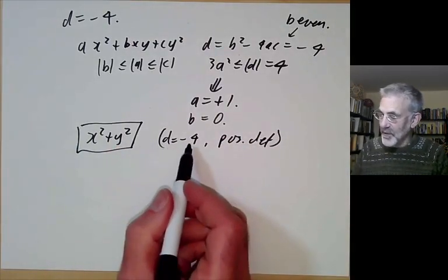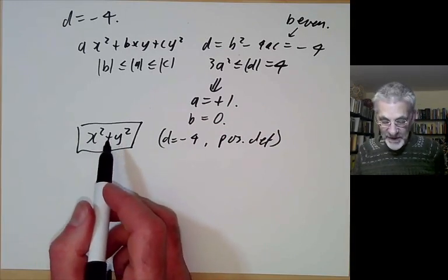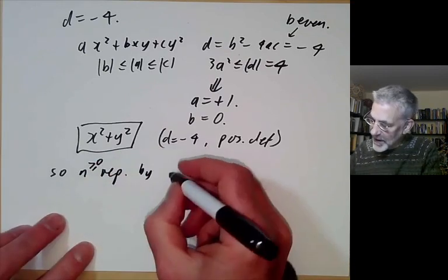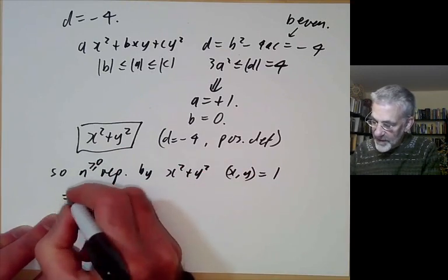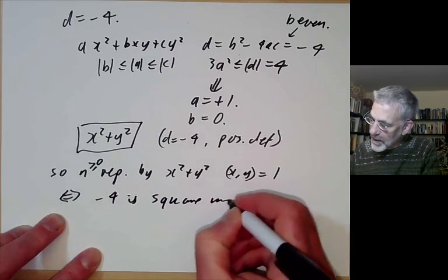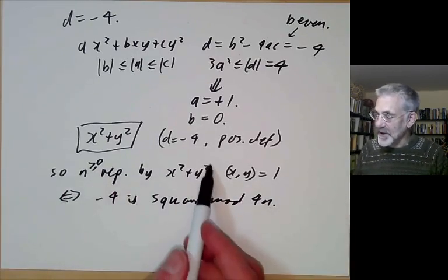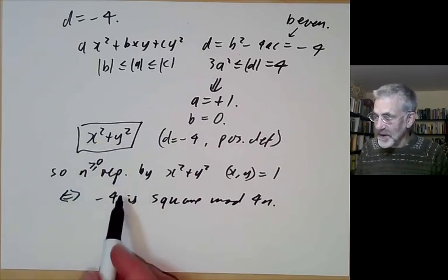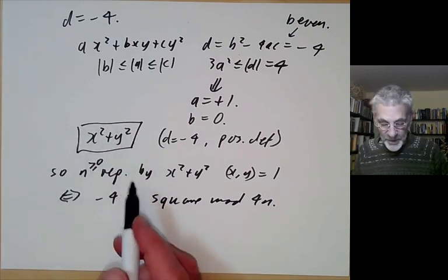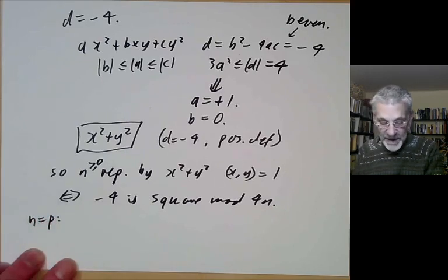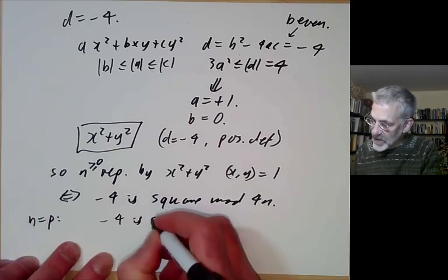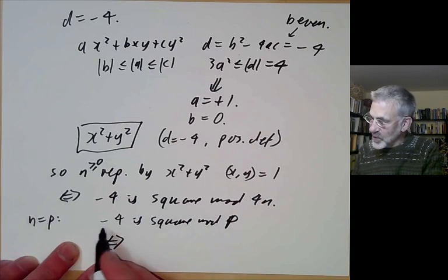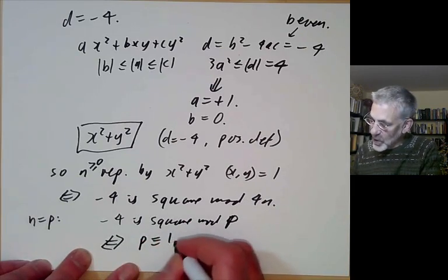There's another reduced form of discriminant −4, which is −x² − y², but that's not positive definite. So n ≥ 0 is represented by x² + y² with x, y co-prime if and only if −4 is a square mod 4n. Taking n = p prime, this says −4 is a square mod p — obviously a square mod 4 — so we need −1 to be a square mod p, which is equivalent to p ≡ 1 or 2 mod 4.